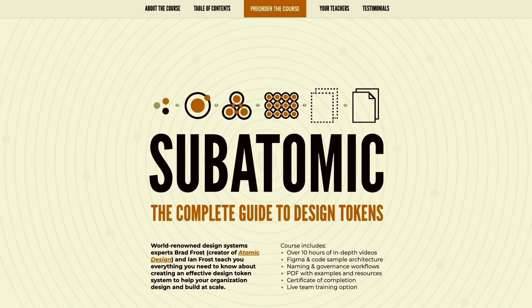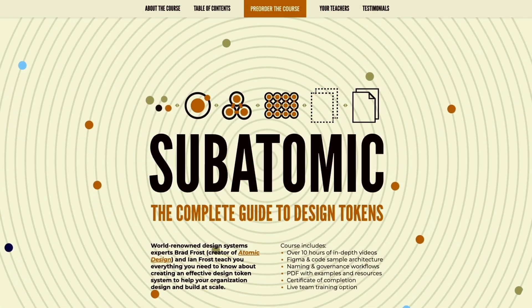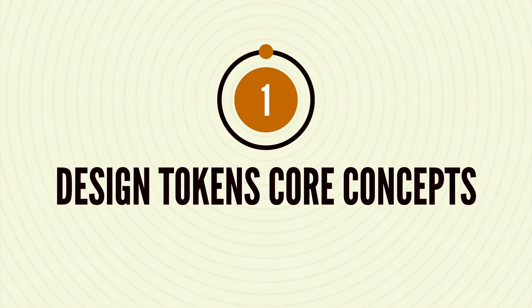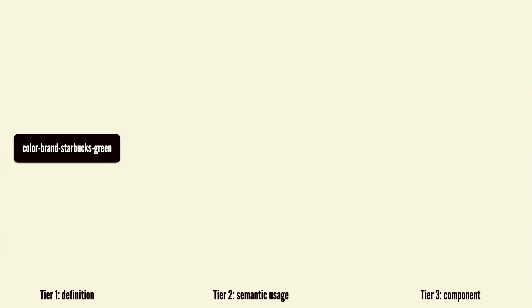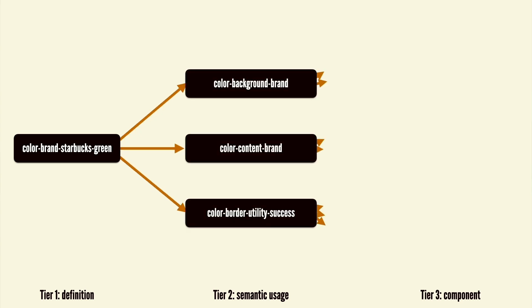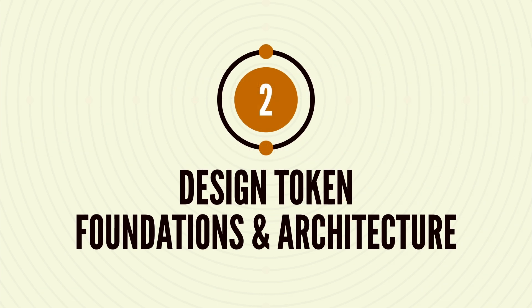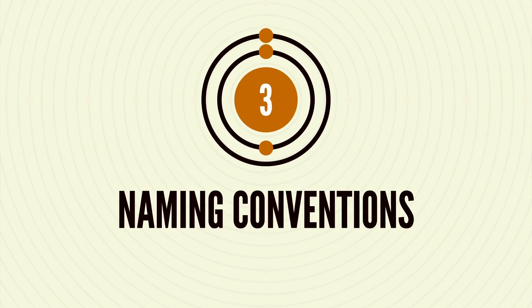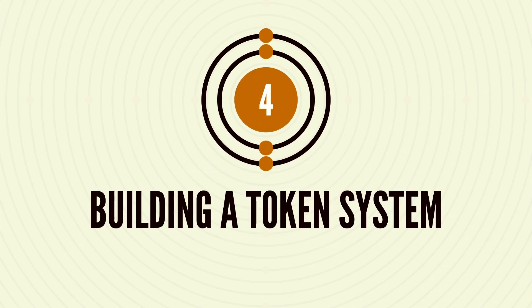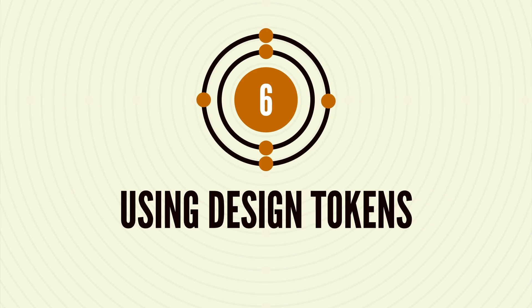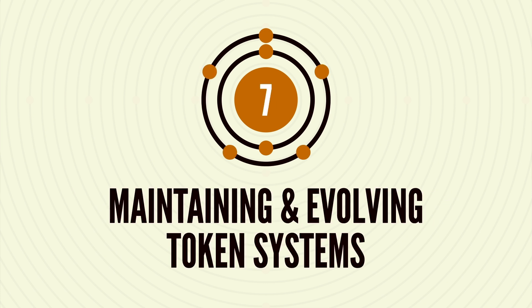Our new video course features eight chapters of in-depth content covering Design Tokens Core Concepts, where we'll introduce a three-tiered system for token definitions, semantic usage, and component-specific use cases. We'll talk about foundations and architecture, the dark art of naming conventions, building, publishing, and adopting a token system, and the people and process involved in making and maintaining a successful token system.